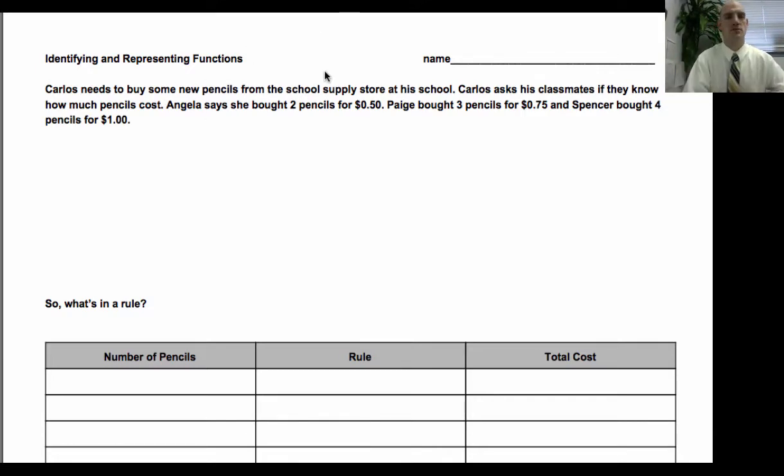The example they give us in the book is about pencils. So let's look at this. Carlos doesn't know the price for pencils, but he wants to buy some. So he asks his classmates if they know how much pencils cost. Angela says she bought two pencils for $0.50. Paige bought three for $0.75. Spencer bought four pencils for $1.00.